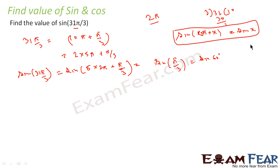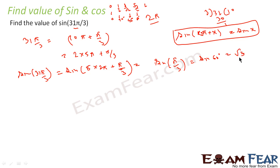To find sin(60°), we use the standard table: for angles 0, 30, 45, 60, 90 degrees, the values of sin are 0, 1/2, 1/√2, √3/2, 1. So sin(60°) equals √3/2.